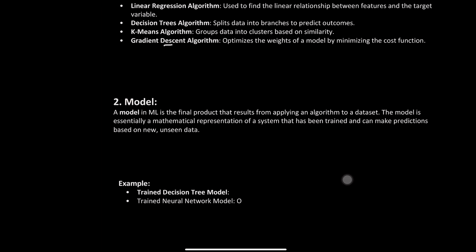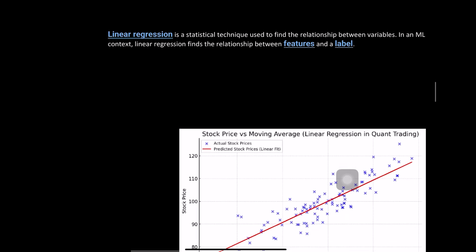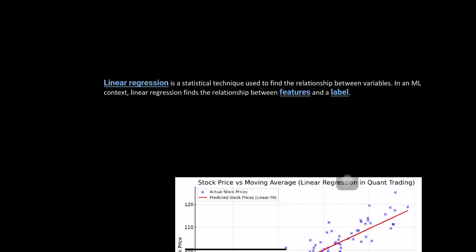A model in machine learning is the final product that results from applying an algorithm to a dataset. The model is essentially a mathematical representation of a system that has been trained and can make predictions based on new, unseen data — for example, a trained decision tree model or a trained neural network model.